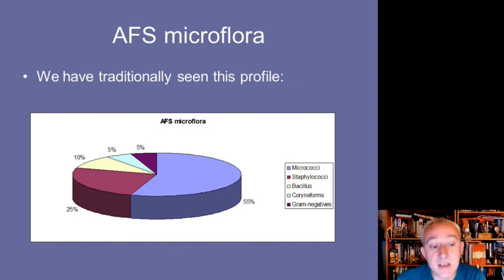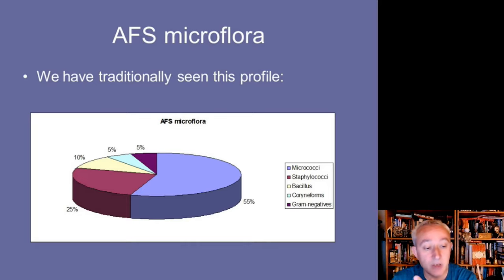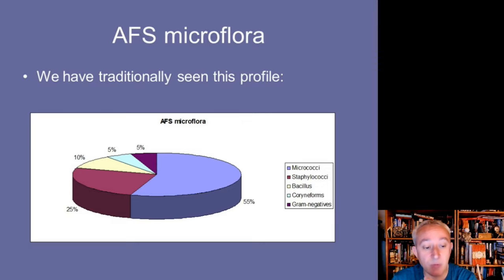We know from aseptic filling areas that we tend to find lots of micrococci and staphylococci, and then lower numbers of organisms with some association with the human skin microbiome, such as Bacillus species and coryneforms. There are also some specific gram-negatives that do have a human relationship, such as Acinetobacter, found between the toe webs, and Paracoccus, which is also a skin-shed organism.